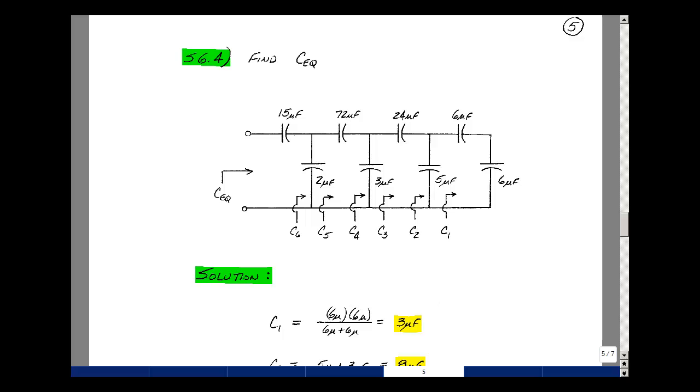This lesson deals with Supplemental Problem 6.4. You can find this problem in the ECE 201 e-book in the Chapter 6 Supplemental Problems on page 5. Given this ladder network of capacitors, can you find the equivalent capacitance looking into these terminals?